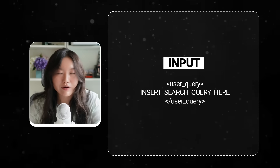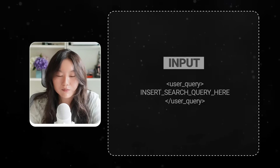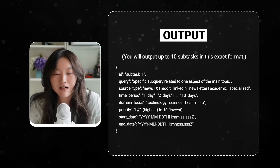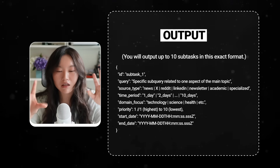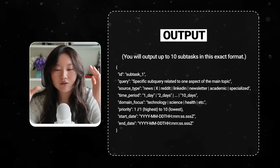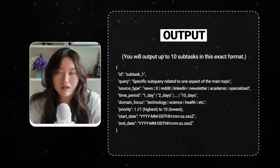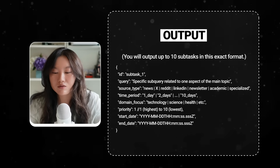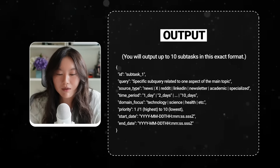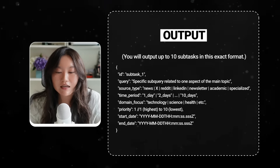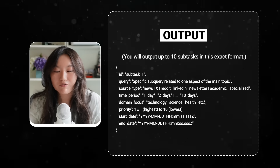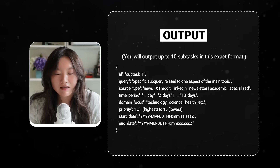The input is within XML tags for the user query — 'insert search query here' is where the user inputs whatever they want to search. For the output, you will output up to 10 subtasks in this exact JSON format. Every subtask — which represents a source — needs to include: an ID, a query specifying a subquery related to one aspect of the main topic, a source type (news, X, Reddit, LinkedIn, newsletter, academic, or specialized), a time period between one day to 10 days, a domain focus such as technology or science, a priority ranking from highest (1) to lowest (10), and the start date and end date in a specific format.